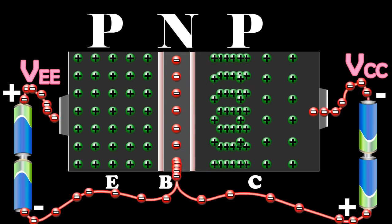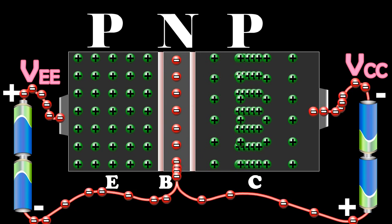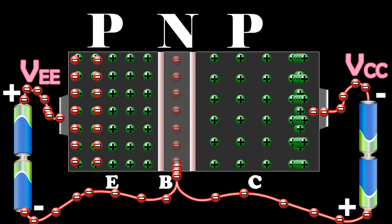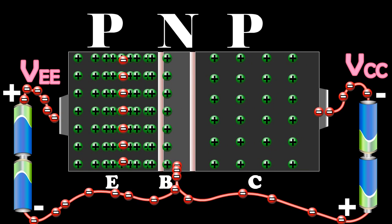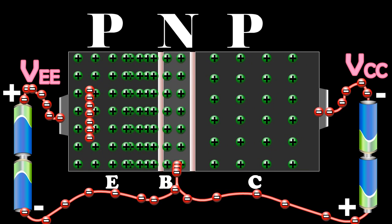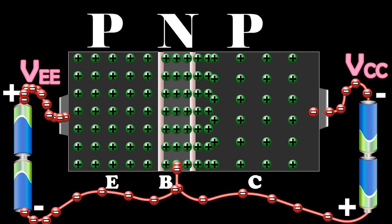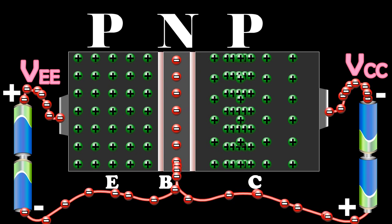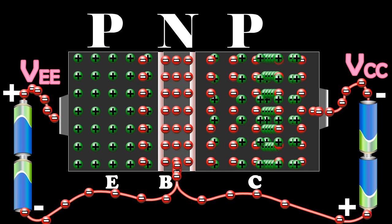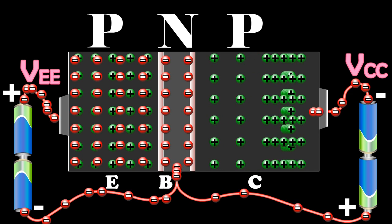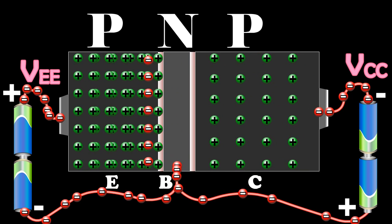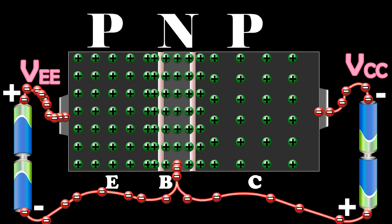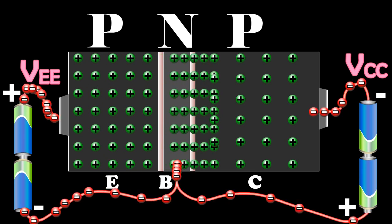The flow of holes from the emitter to the base gives rise to emitter current IE. In the emitter, IE is due to the flow of holes, but in the external circuit the current is due to the flow of electrons from the emitter to the positive terminal of the battery VEE.